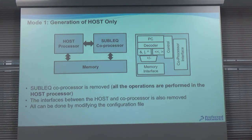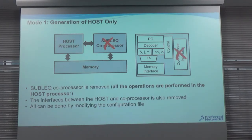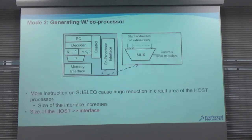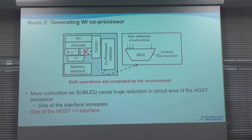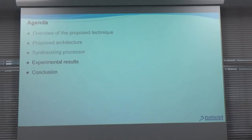When using host-only mode, we remove the sublet coprocessor and also remove the coprocessor interface from the host processor, reducing the overall circuit area. When generating with coprocessor, the configuration depends entirely on the application — for example, we might choose not to include the shift operation in the host processor and instead move it to the sublet coprocessor, depending on how we want to minimize power and other metrics.